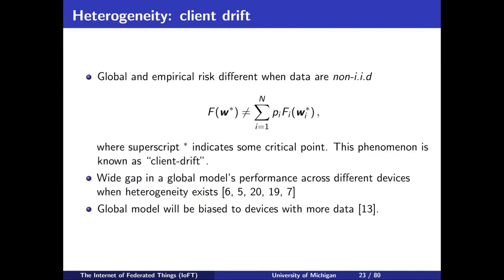However, this has challenges when data is heterogeneous, simply because the global solution is not the optimal solution of the local risk function. This is only true if all clients have IID distributions and infinite datasets. Many works in this area have shown that one model that fits all will easily fail when you have heterogeneity. And interestingly, by the end of this lecture I will show you an opposite conclusion: when we have heterogeneity, it's much better to learn separate models.